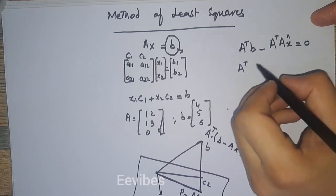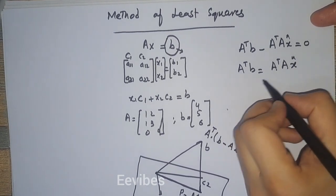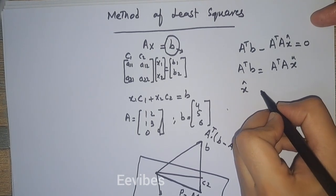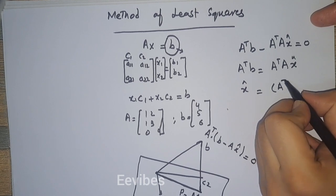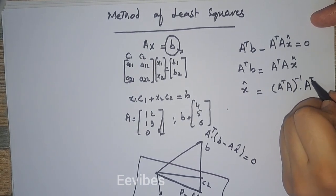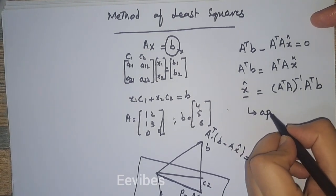If you take it on the right-hand side, you will get A^T A into X̂, and on further simplification, X̂ will be equal to (A^T A)^(-1) A^T B, where X̂ is the approximated solution.